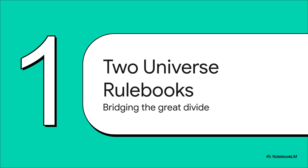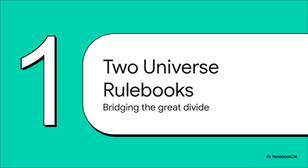Think of it like the universe has two different rulebooks. We're going to look at that huge gap between our world and the seriously weird quantum realm. This slide just lays it out perfectly. In our world, the classical world, if you want to get a ball over a hill, you have to give it enough of a push to roll over the top. Simple. Predictable.